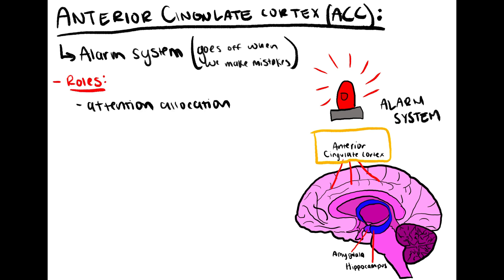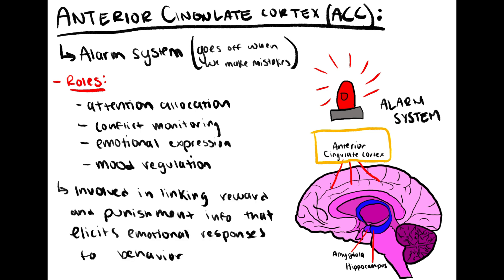The ACC has a couple of roles. It's involved in attention allocation, conflict monitoring, emotional expression, and mood regulation. It's also involved in linking reward and punishment information that elicits emotional responses to behavior.